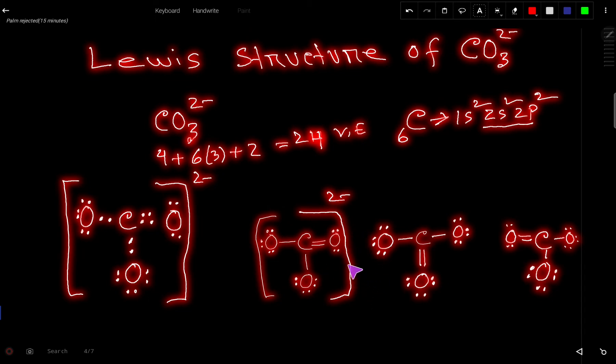Here this is the Lewis dot structure of CO₃²⁻, but this oxygen, this oxygen, this oxygen is similar. So you can move lone pair from this oxygen or this oxygen or this oxygen. These are similar, so if you move from this oxygen, then you will get this structure.